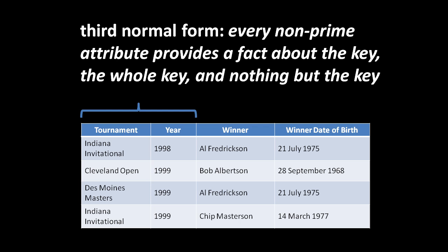An example that violates this rule: a table of tournaments and their winners. Right away, a table about both tournaments and winners should raise alarm bells — tables should be about one sort of thing. Here the primary key is the combination of tournament and year, assuming each tournament is held once a year. The non-prime attributes are winner and winner date of birth. The winner column checks out, but winner date of birth does not.